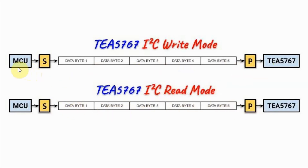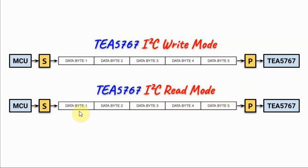In the write protocol, the microcontroller begins with the start condition, and then it will write 5 bytes in this sequence — byte 1, 2, 3, 4, and 5 — followed by the stop condition. In the read protocol, the microcontroller will also read 5 bytes: byte 1, 2, 3, 4, and 5. The definition of these bytes will be explained in the next clip.